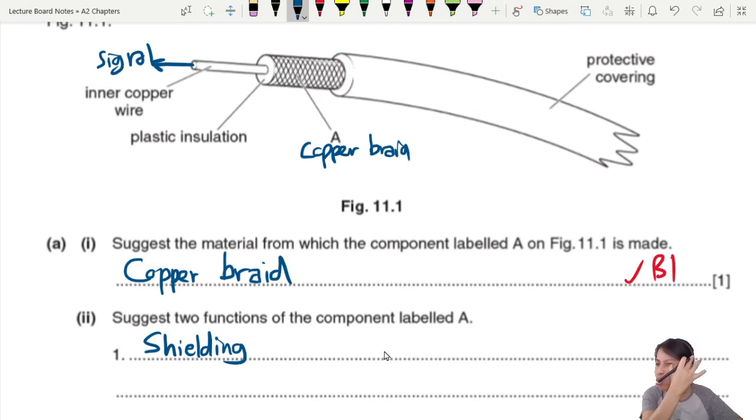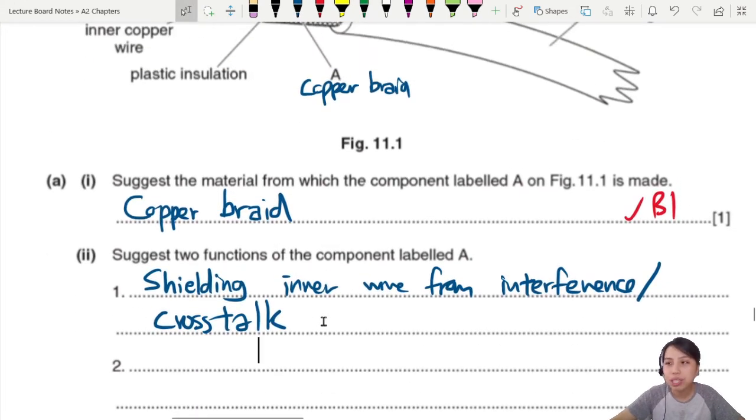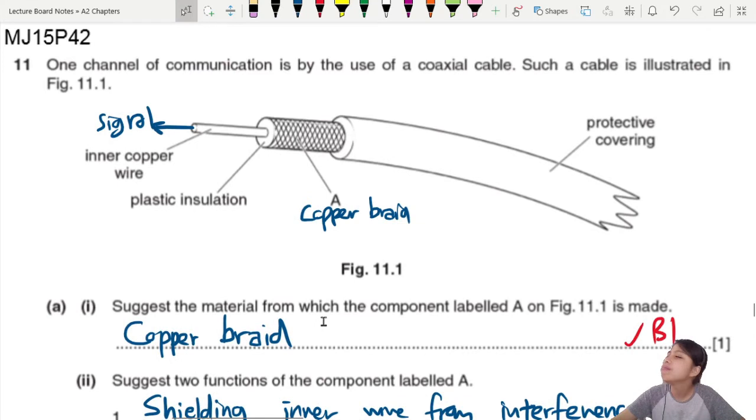So the inner copper wire, this one is the one that transfers the signal. We don't want interference. We don't want crosstalk. So we need to shield it from some kind of EMF interference. So shielding her inner wire from interference.